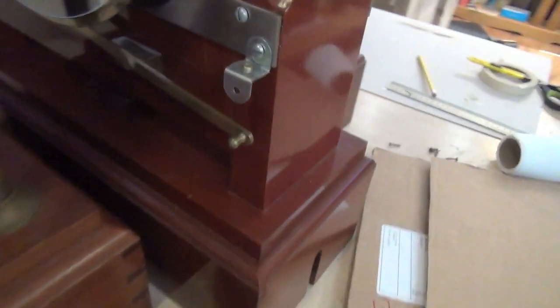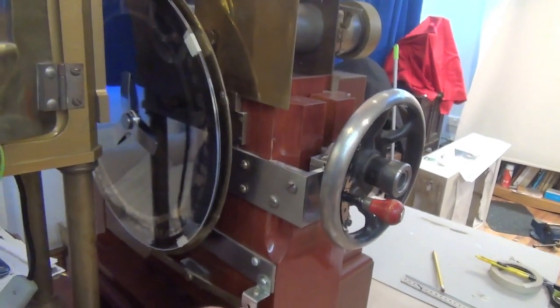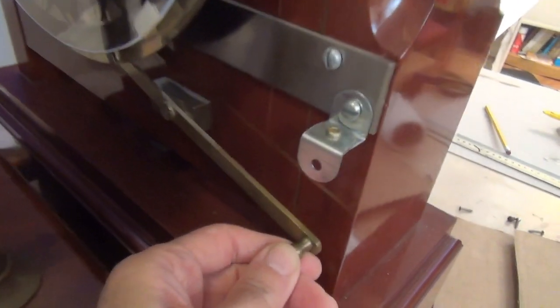So without making any holes in the machine I've added this little bracket which just acts as a stop, and I've done that with both machines. Here's the other one. So again it just acts as a stop.